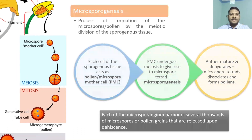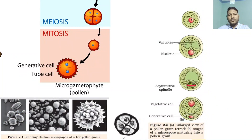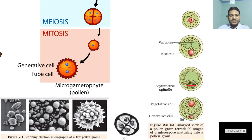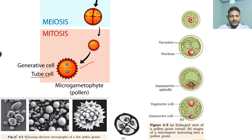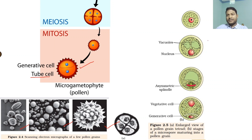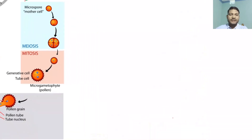The pollen grains are released upon dehiscence. When we talk about the pollen, each mature pollen will have two cells in most cases — about 60% of angiosperms will have two cells. One is the generative cell and the other is the vegetative cell. These are scanning electron micrographs of pollen grains; they are beautiful when seen under the microscope. This is the process of development of the microspore into the pollen grain. At the mature condition, pollen grains will have a vegetative cell and a generative cell in 60% of angiosperm forms.